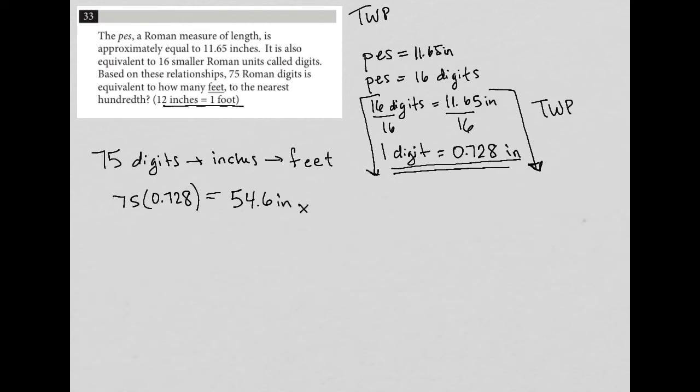And then I can use this conversion factor where I know that 12 inches equals one foot. And I put this here purposely so that the units can cross out. Instead of putting 12 inches on top and one foot on bottom, I put 12 inches on bottom and one foot on top so that these units can cross cancel, leaving me to take this 54.6 and divide it by 12. So 54.6 divided by 12 in my calculator, I get 4.55 feet.